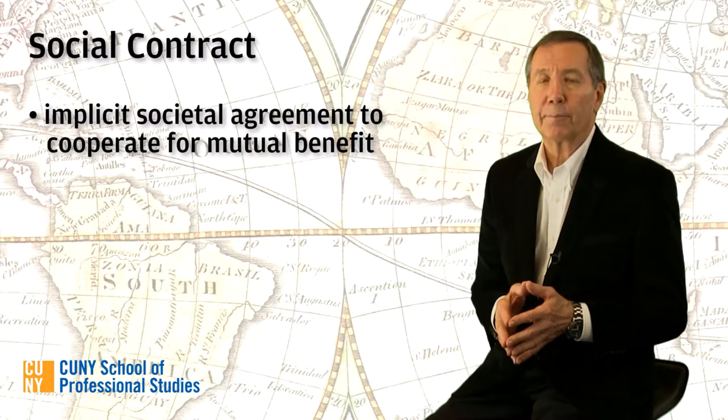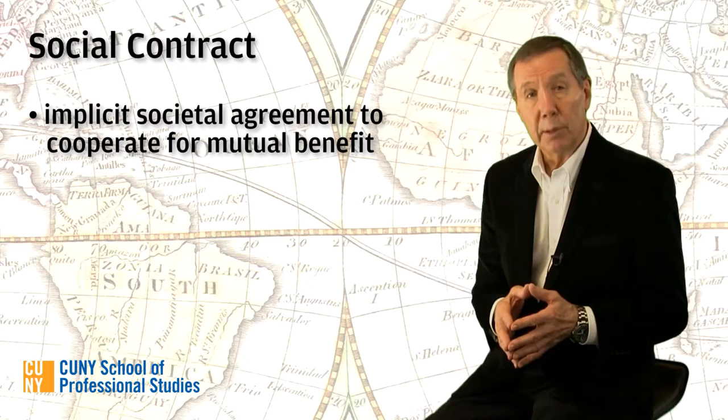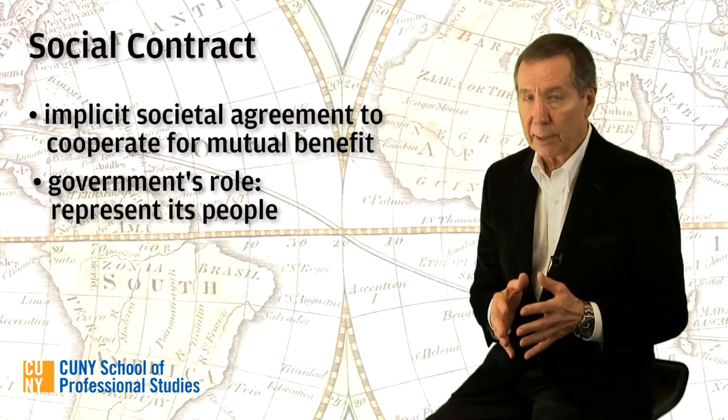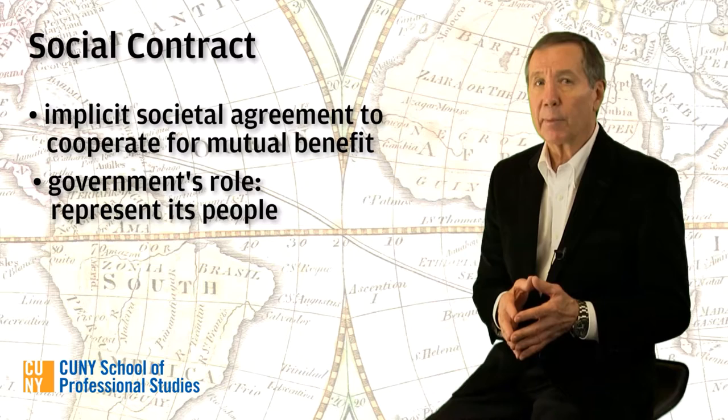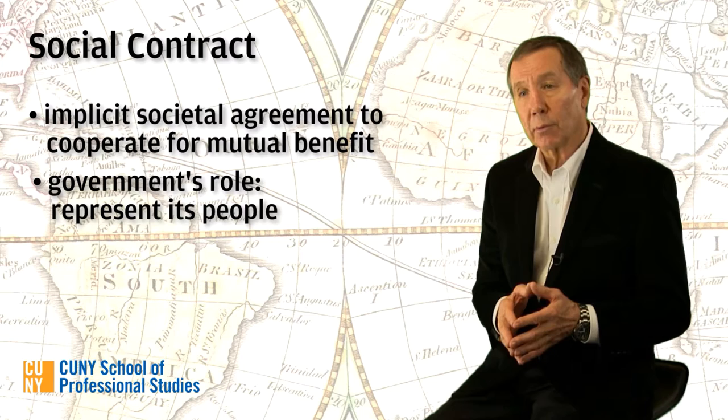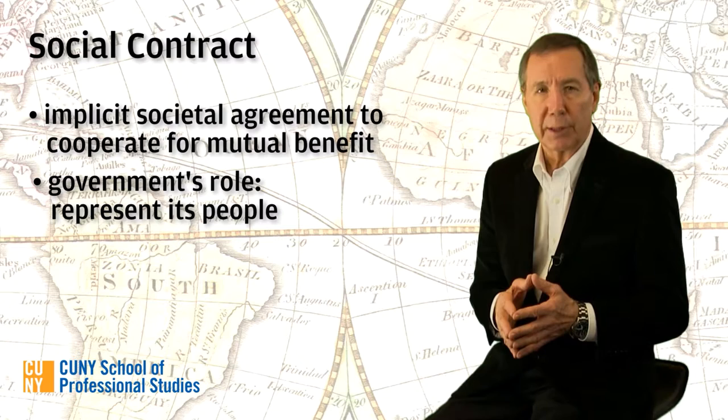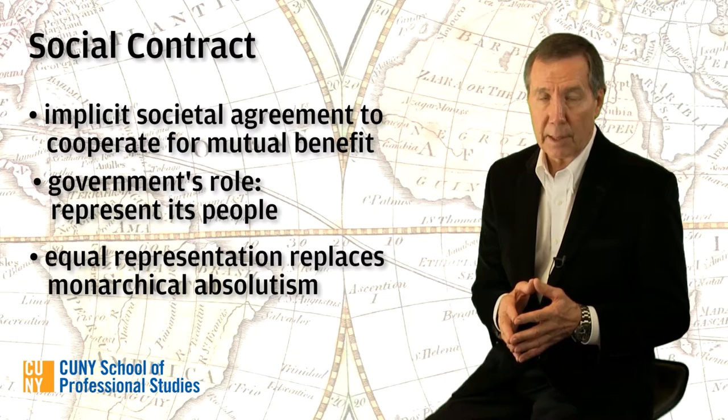The theory of a social contract — that is, an implicit agreement among the members of a society to cooperate for mutual benefits — dictated that the government's role was to represent and not reign over or oppress the people. If the government didn't represent its people and defend their natural rights, the people were entitled to replace their government. This notion of equal representation challenged the very core of traditional monarchical rule.